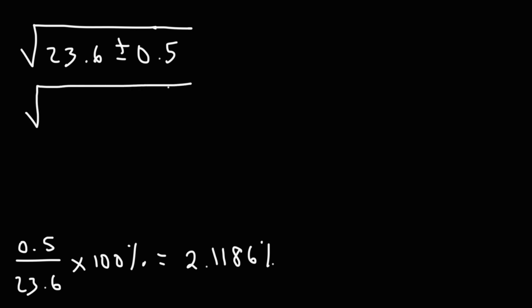Now let's try another example, but with a square root. So let's say we have the square root of 23.6 plus or minus 0.5. Go ahead and try this problem. First, let's convert the uncertainty to a percent uncertainty. So let's divide these two numbers and then we're going to multiply it by 100%. This is going to be 2.1186%. So now let's rewrite the problem. We have the square root of 23.6 plus or minus 2.1186%.